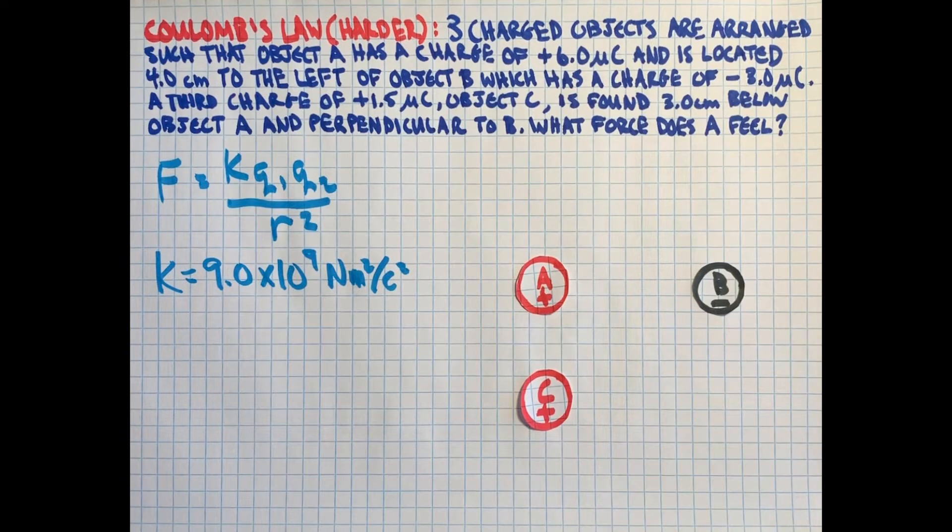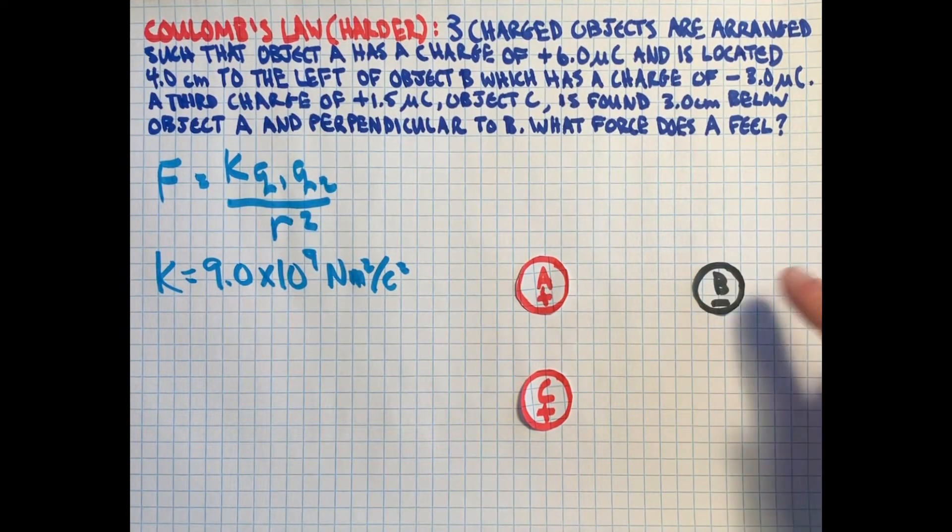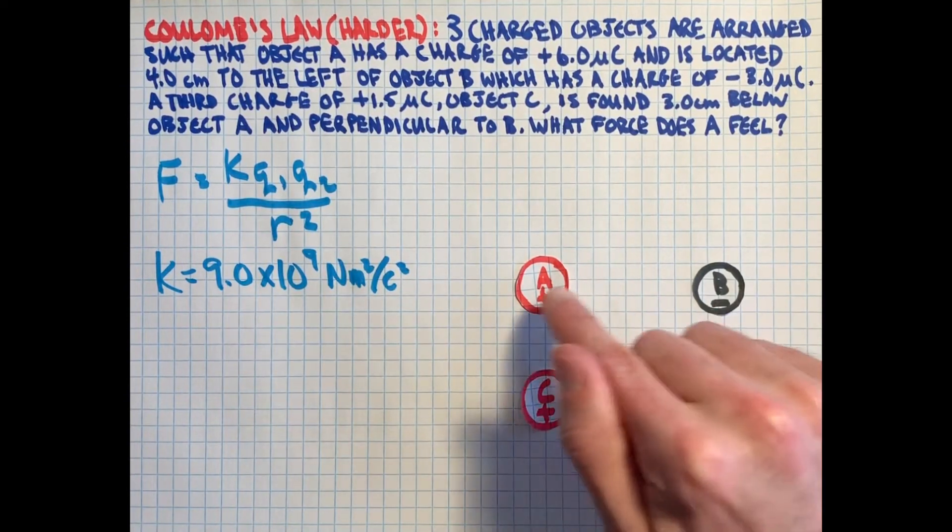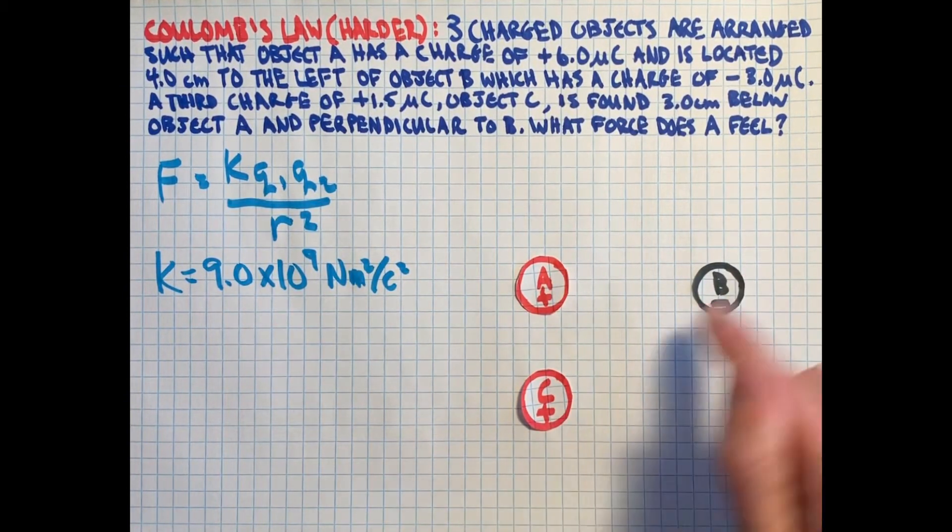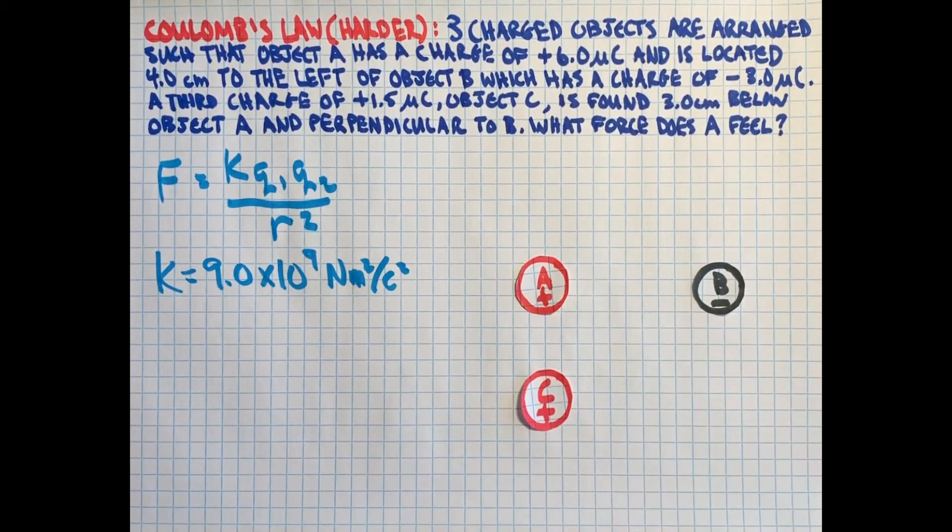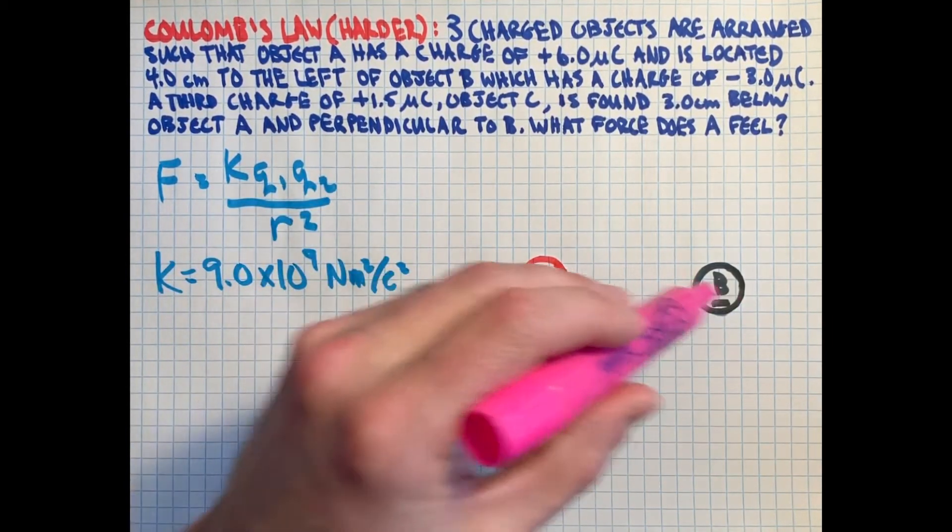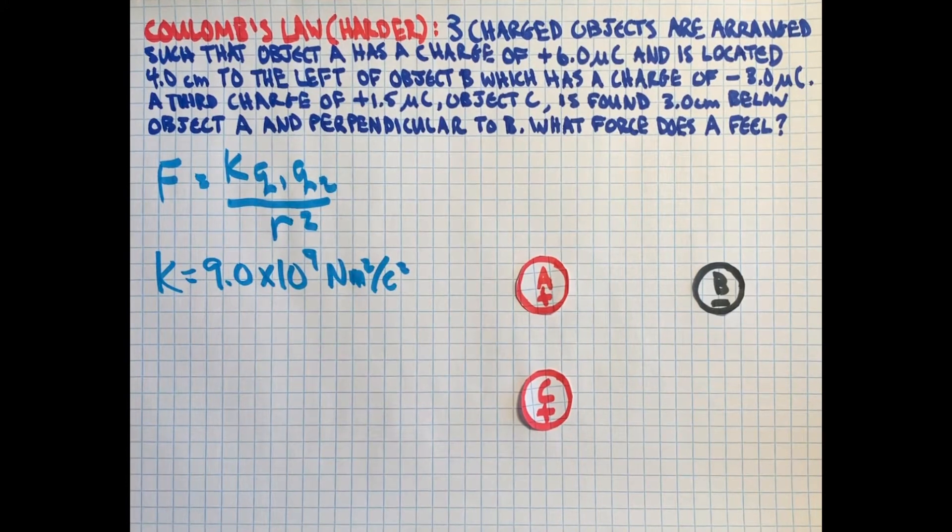Now, what makes this more difficult than just a simple question when there's only two things, is that there's two forces on A. So we could ask this question about object B or object C if we wanted to with the exact same numbers up there. We'd just be saying, well, how much force is A putting on B, and how much force is C putting on B? In this case, though, we're asking about A, so we want to know what's the force that B is putting on A, and what's the force that C is putting on A?